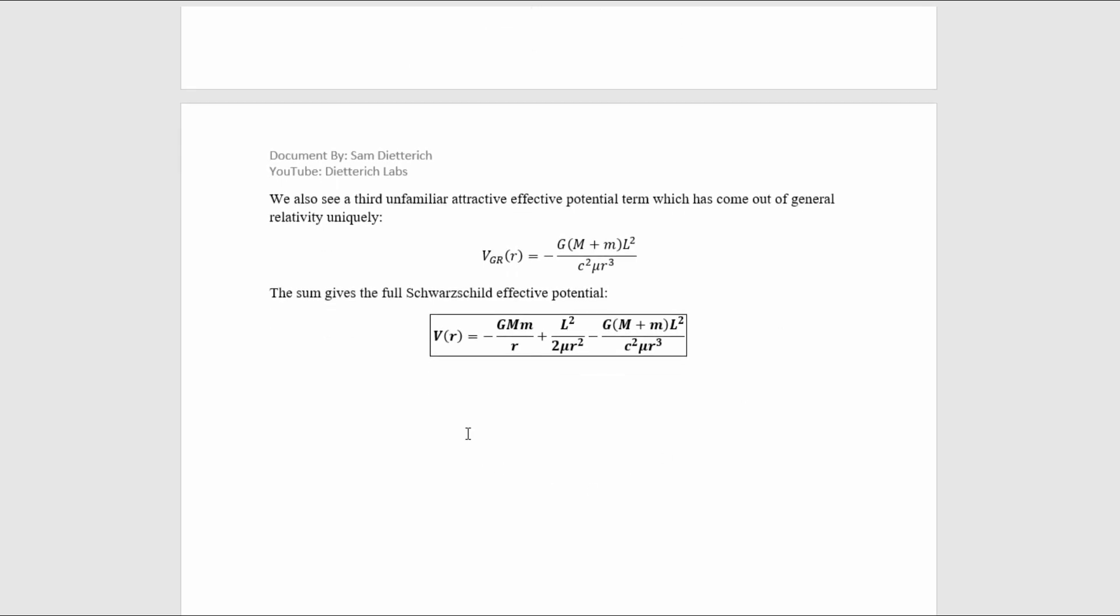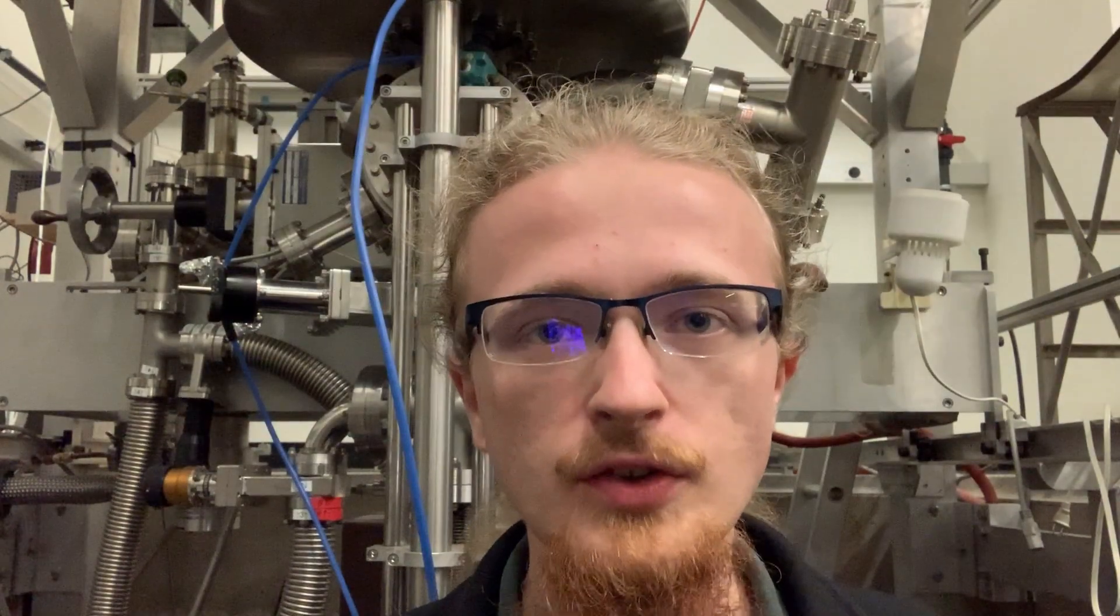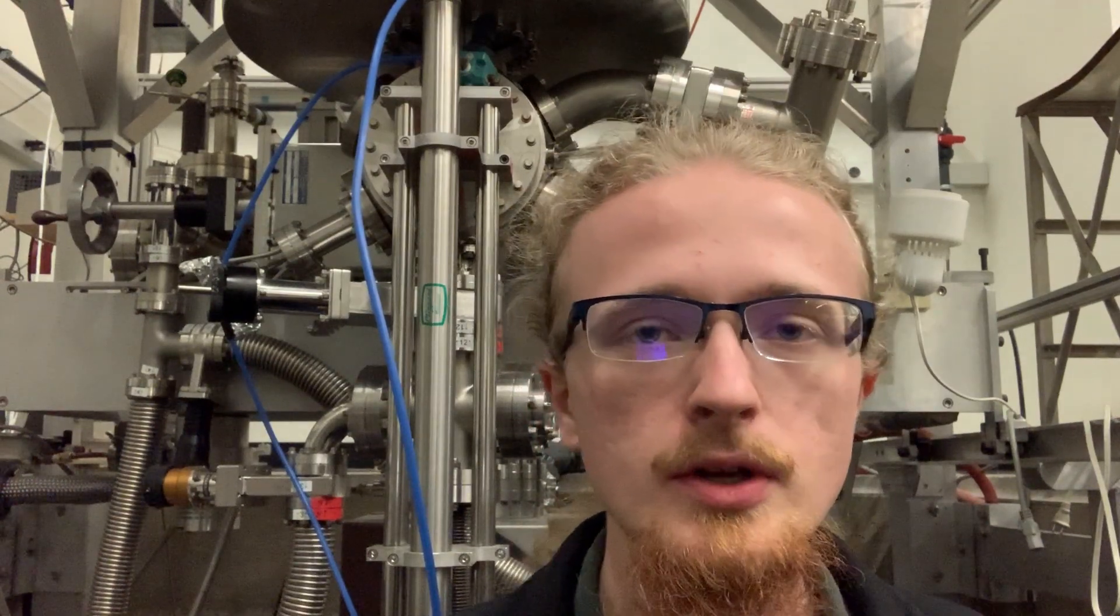If we take the sum of all three of them, we get the complete effective potential of the Schwarzschild geometry. So that is how you derive the general relativistic correction to Newton's gravity law. So now you know how to start with the Schwarzschild metric and use it to derive the general relativistic correction to the Newtonian gravity law.